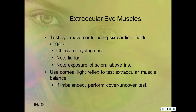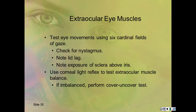For extraocular eye muscles: test eye movements using the six cardinal fields of gaze. Check for nystagmus and note lid lag. Note any exposure of the sclera above the iris—you should not be able to see the sclera above or below the iris on most eyes, with the exception of some Mediterranean people. If you can see the sclera all the way around the iris, suspect exophthalmos with lid retraction. Use the corneal light reflex to test extraocular muscle balance, then perform the cover-uncover test.